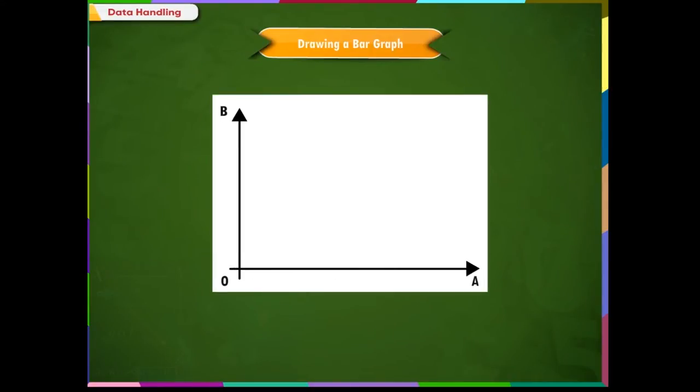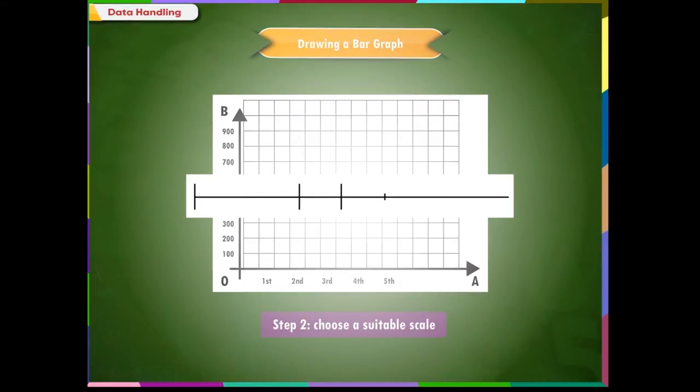The next step is to choose a suitable scale. Look at the numbers we have: 650, 800, 750, 300 and 900.